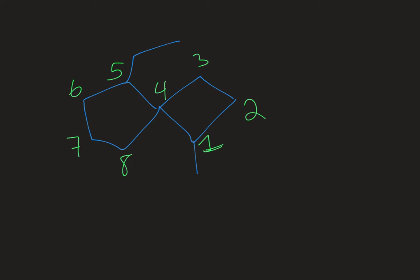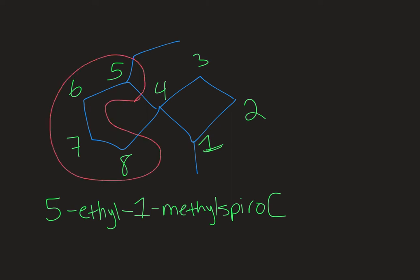My substituents go out in front in alphabetical order just like for any other naming. So this would be 5-ethyl-1-methyl-spiro and then I have a bracket and now I have to see the number of carbons outside of the shared carbon. So I've got carbons five through eight here so that's a total of four carbons outside of the shared carbon on the left hand side. And then I have carbons one through three on the right hand side so that's three total carbons.